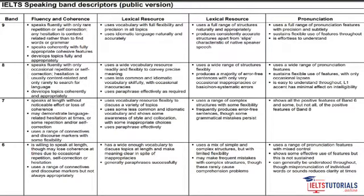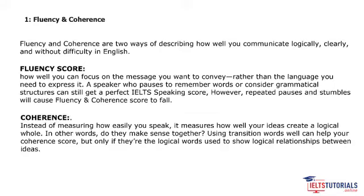If you're getting six bands, it's because you're not up to the mark for seven or eight. Before giving the complete band descriptors, let me explain what each criterion means — fluency and coherence, grammatical range and accuracy, and lexical resource.